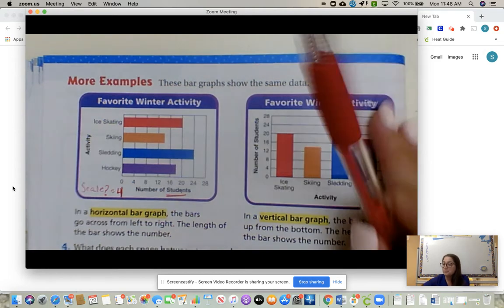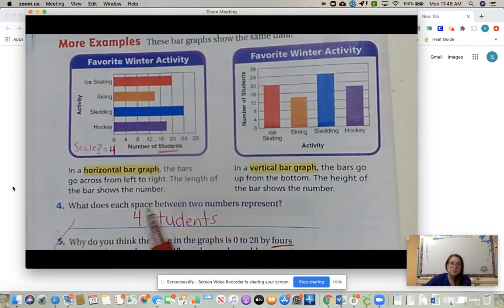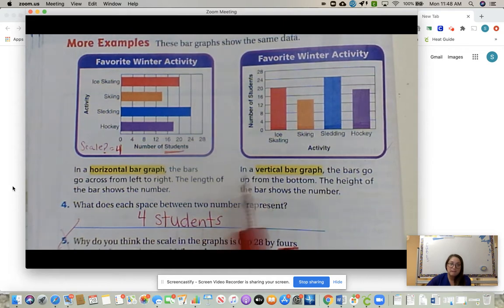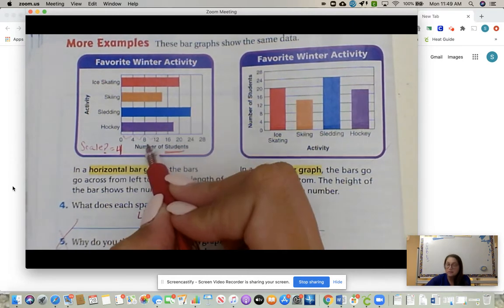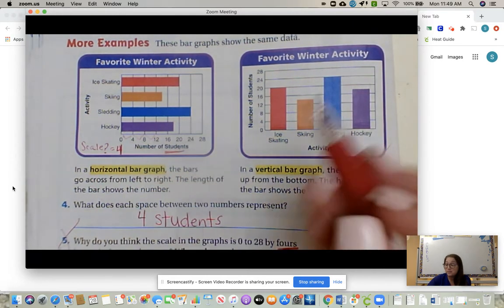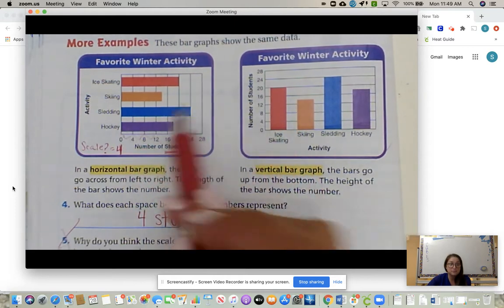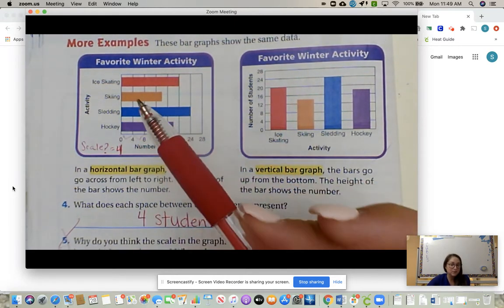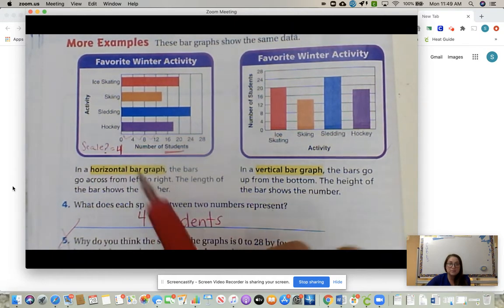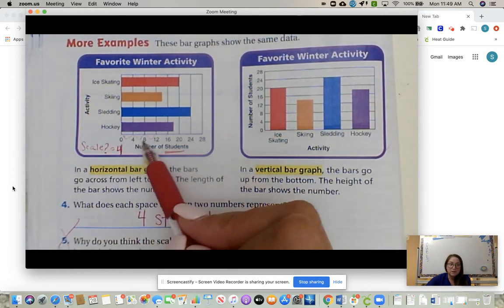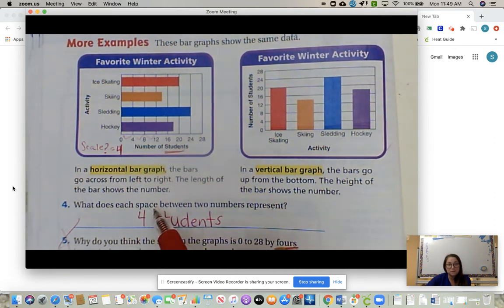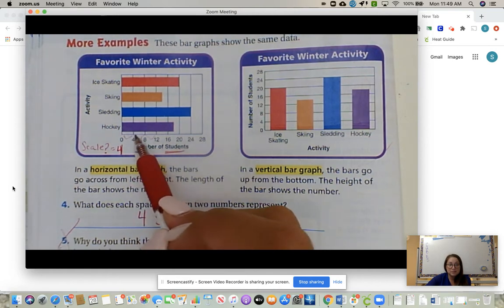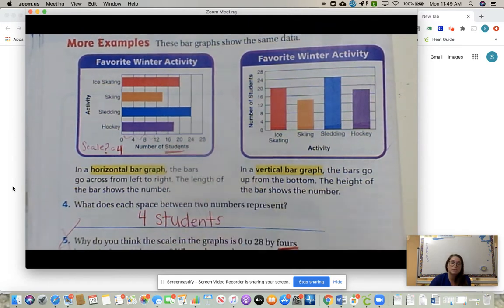Number four says, what does each space between two numbers represent? That is saying this space right here - how many numbers does that represent? What's the scale? It's pretty much asking, what is the scale of the two bar graphs? But scale is the vocabulary we want to use. Well, it's skip counting by fours, right? 0, 4, 8, 12, 16, 20, 24, 28. So the space right here represents four additional students. So there's four students, there's four, there's four, and so on and so forth.